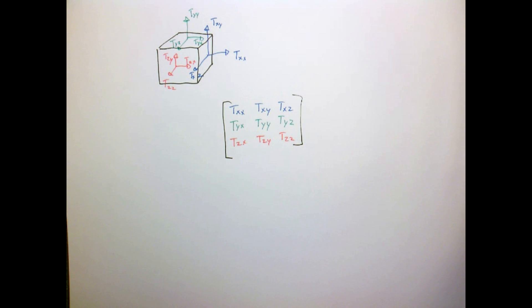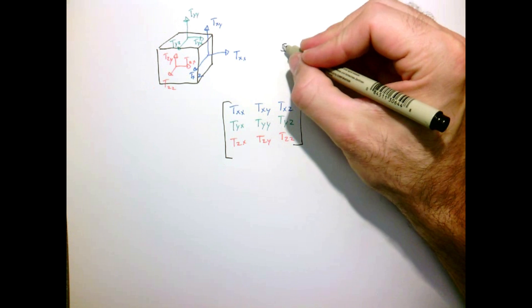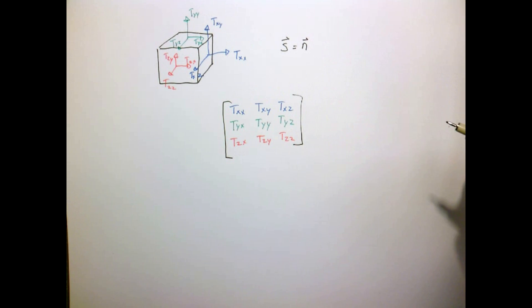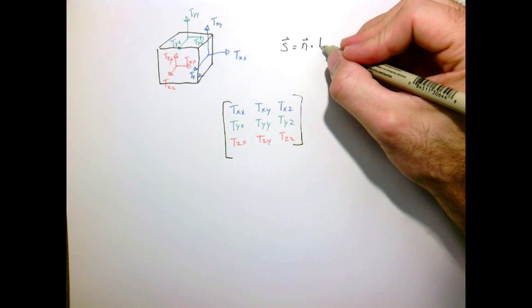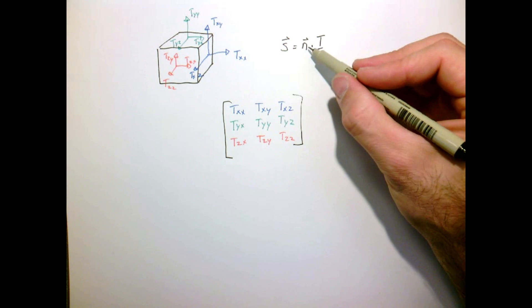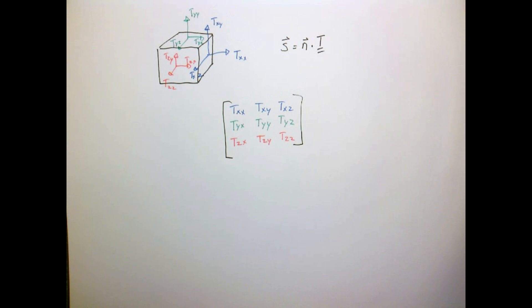So there's our tensor. Now if we want to find the stress vector on any surface, all we have to do is take our stress tensor and take the dot product with the normal vector. So again, the arrows are vectors, the two lines is a tensor. And if I take the dot product of a vector with a tensor, I get back a vector.